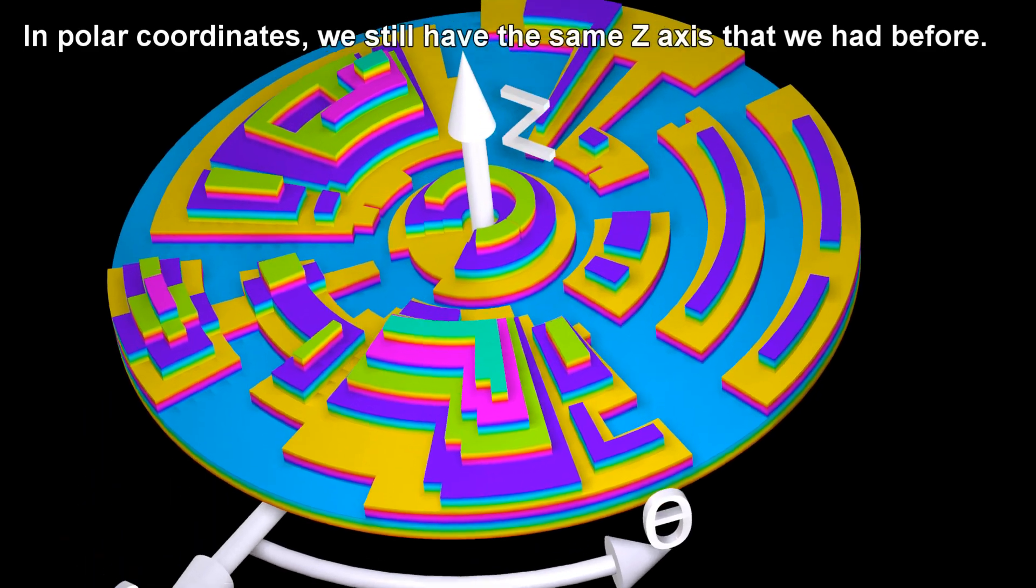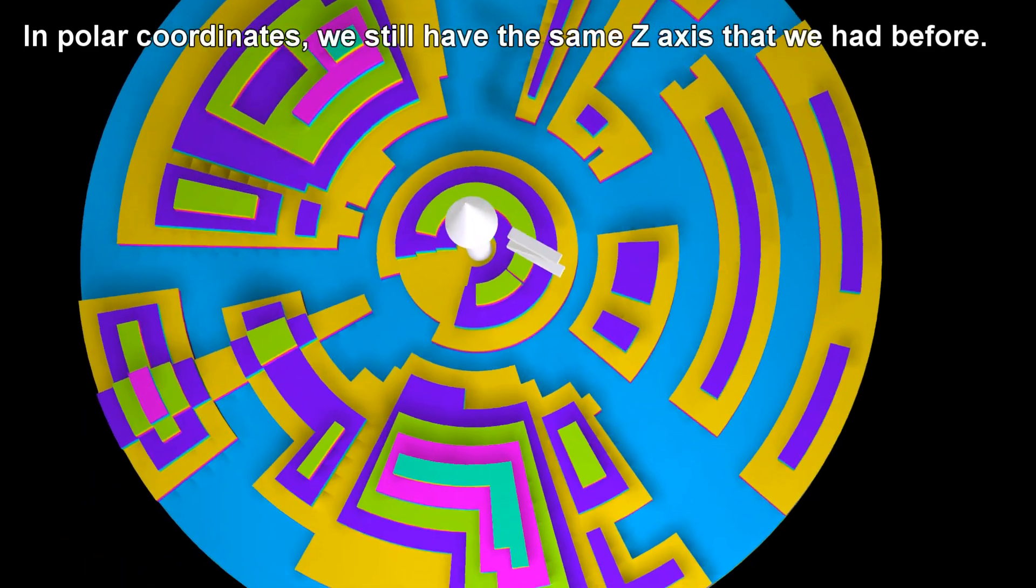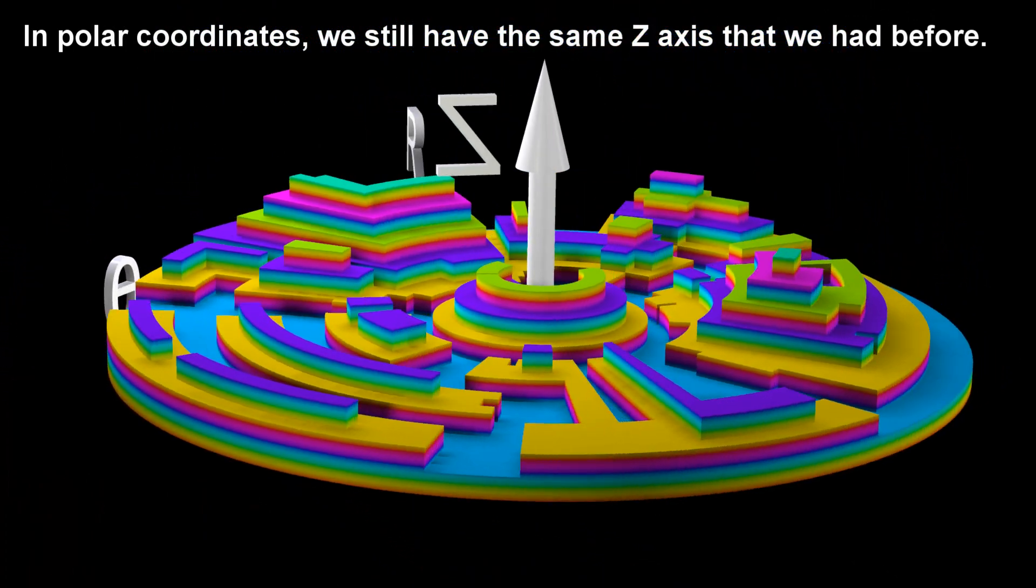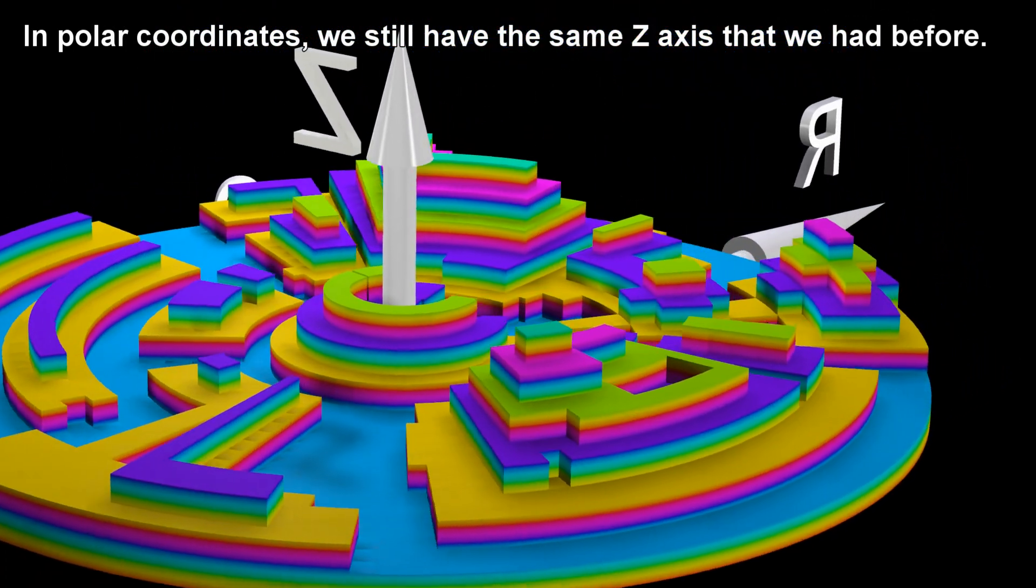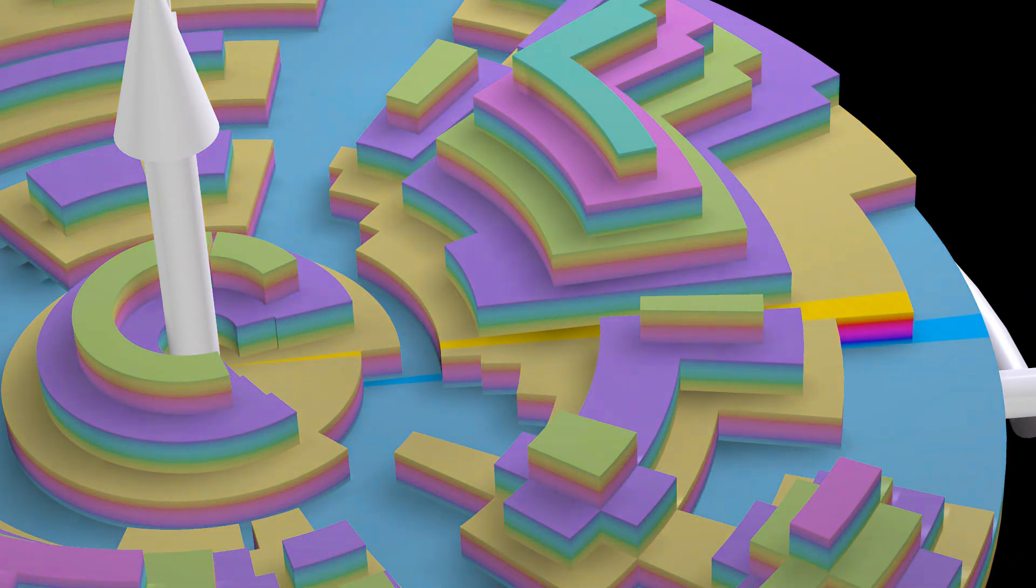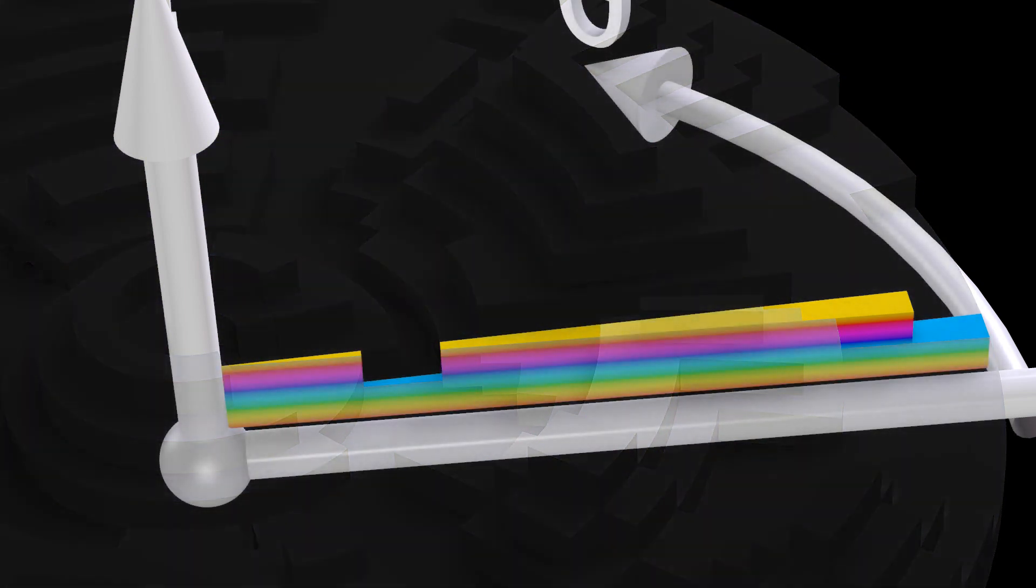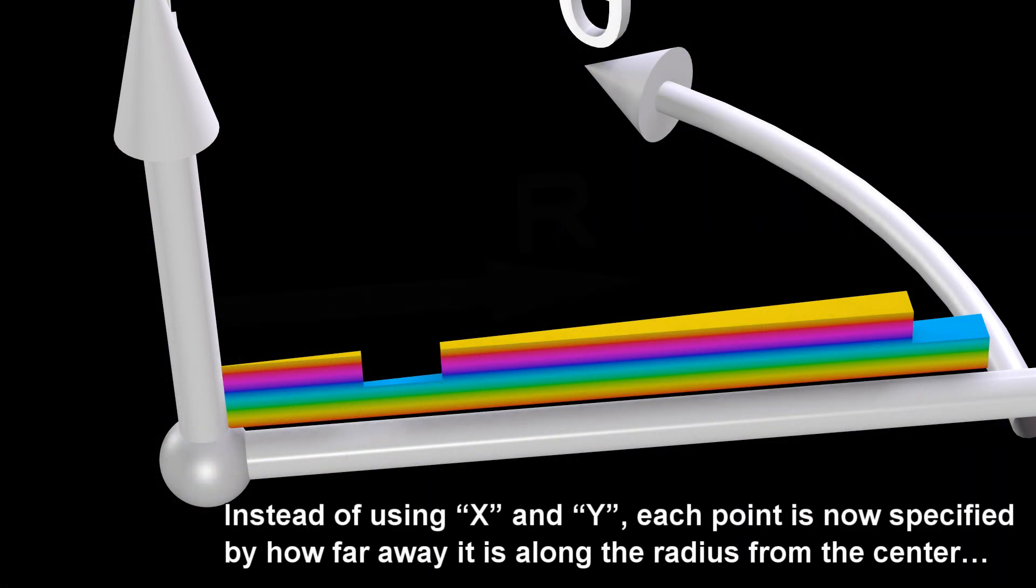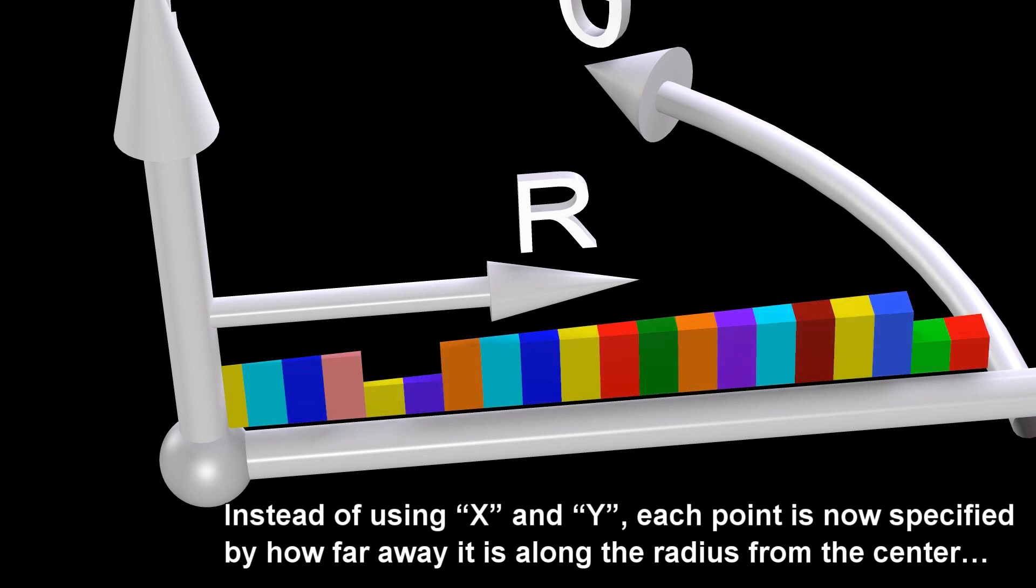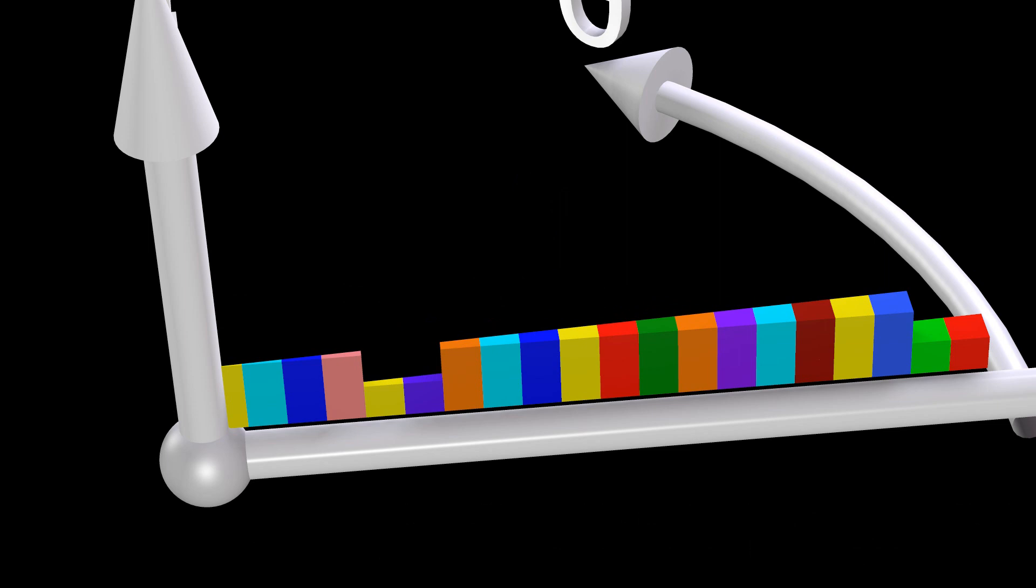In Polar Coordinates, we still have the same Z-axis that we had before. Instead of using X and Y, each point is now specified by how far away it is along the radius from the center, and by the angle θ.